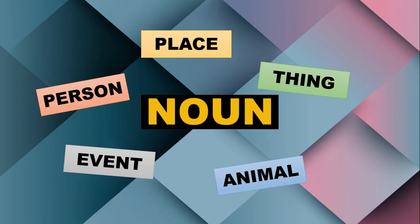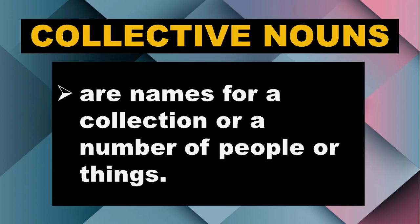Now, let's talk about nouns. We all know that a noun is a name of a person, a place, a thing, an animal, or an event. Just like noun, a collective noun — these are names for a collection or a number of people or things. So, if they are a group of people, a group of animals, or a group of things, there is a specific term for that group and we call that collective nouns.